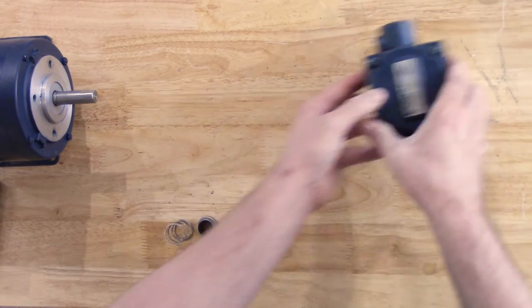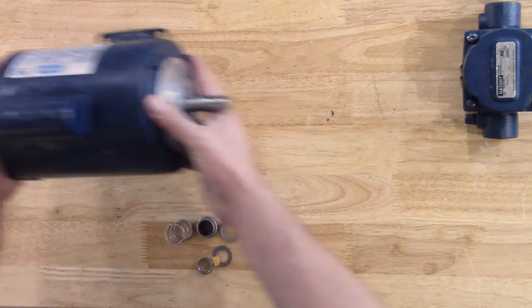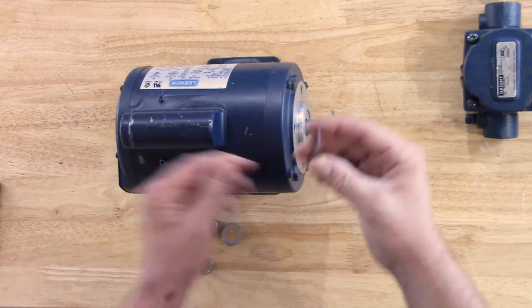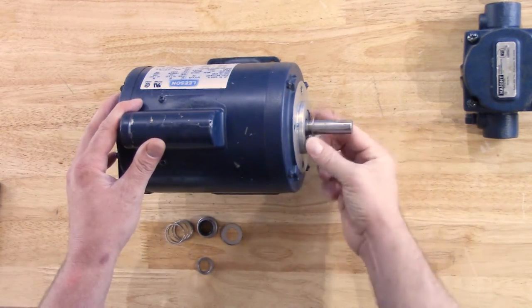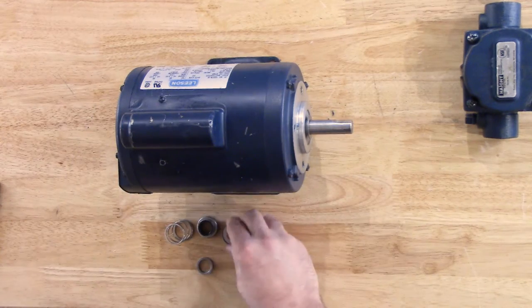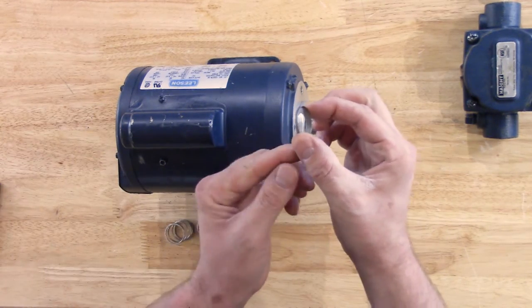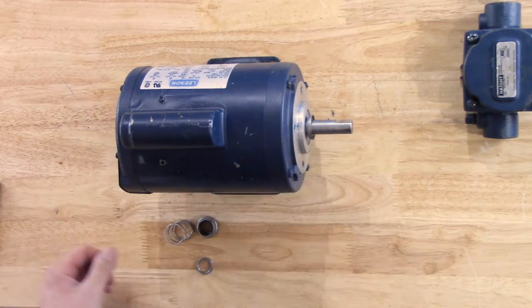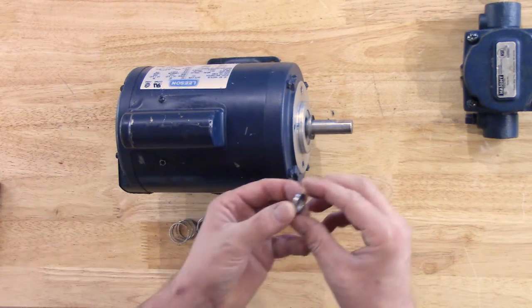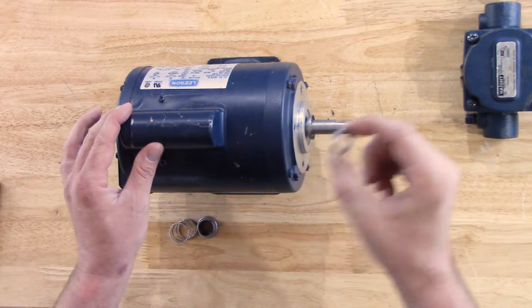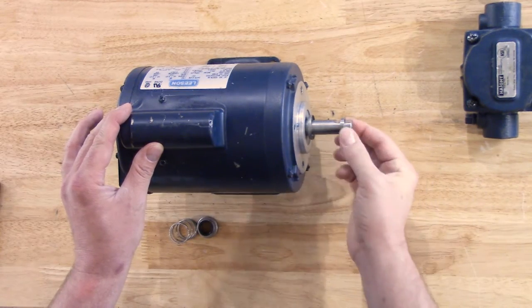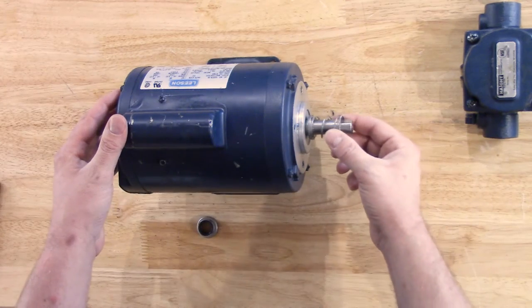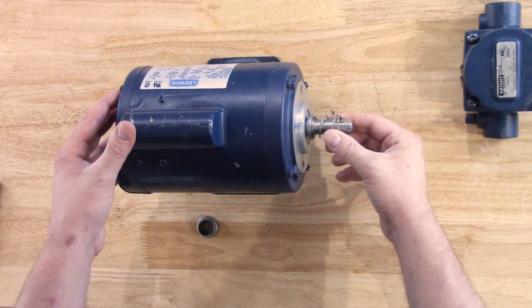Now that we have our pump put back together, we'll set this off to the side for a moment and bring our attention back to the motor. Here, we will start to put the seal kit back together by starting with the flat washer going on to the motor first. Then we will go with our recessed washer with the recess facing towards the pump. Now we can go on with our spring spacer as well as our spring that goes over that spacer and inside of that recessed washer that we just put on.